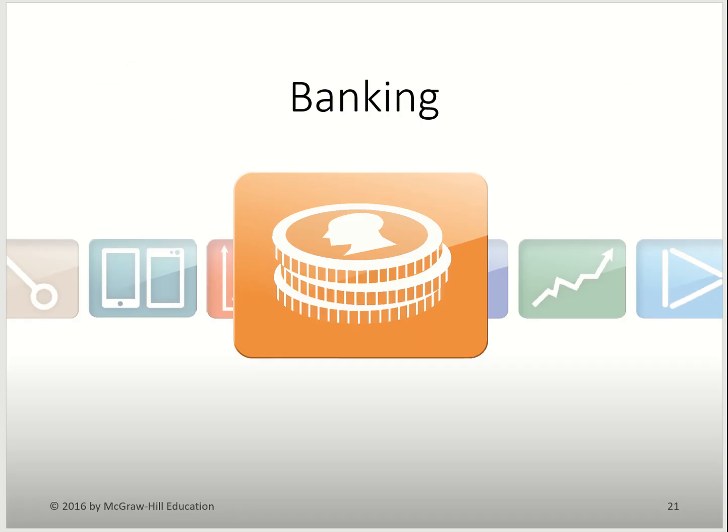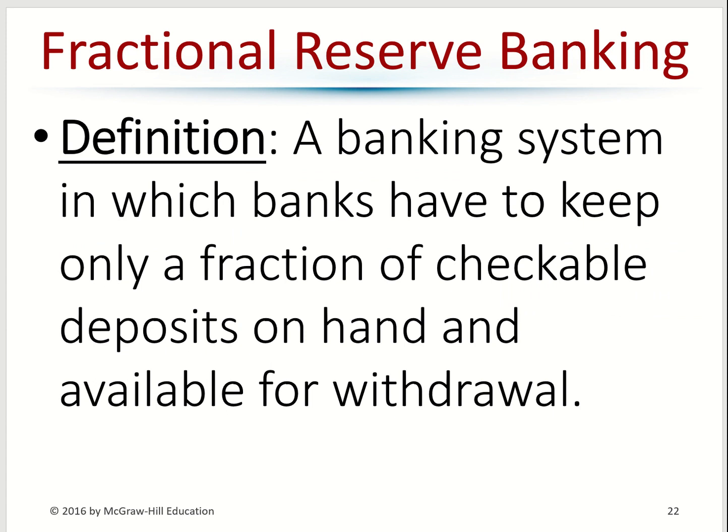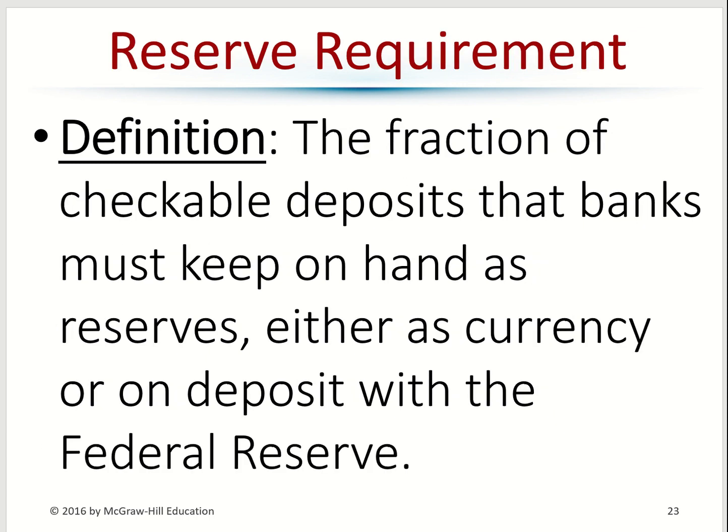Our banking system is called a fractional reserve banking system — a fraction of the reserve must be kept in the bank at all times. If banks loaned everything out, they might earn more profit but would be in a very risky position, because if anyone tries to get their money out, the money wouldn't be there. The moment a bank runs out of cash, it's called insolvent, and that's one step away from bankruptcy. To ensure banking stability, every bank must keep some cash on hand — this is the reserve requirement.